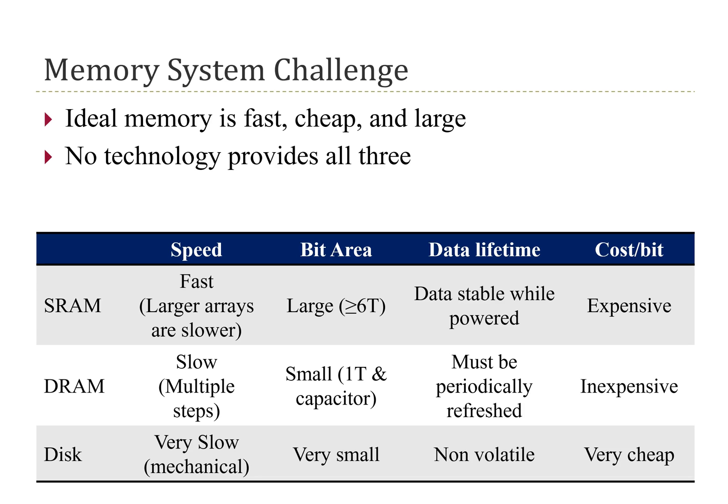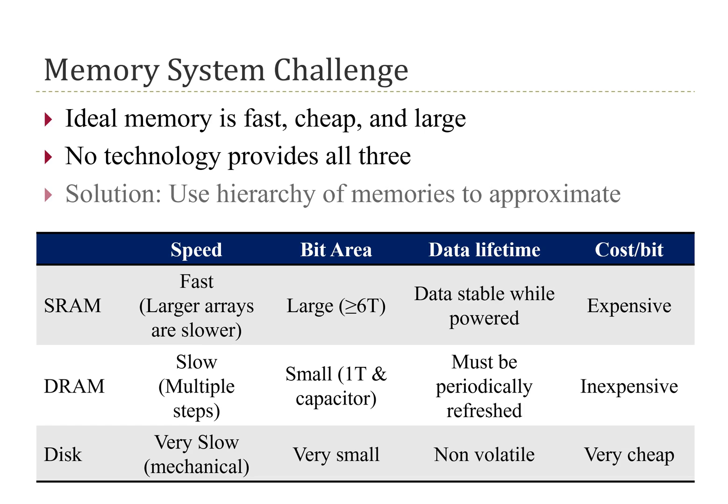That is actually what the previous figure was showing: DRAM versus the processor. And even slower than that are disks, which are very dense and very cheap in terms of cost per bit, but are even slower than DRAMs. So the solution to creating a semi-ideal fast, cheap, and large memory is to use a hierarchy of memories to approximate this ideal, getting the benefits of fast SRAM with the higher densities of DRAM or disk.